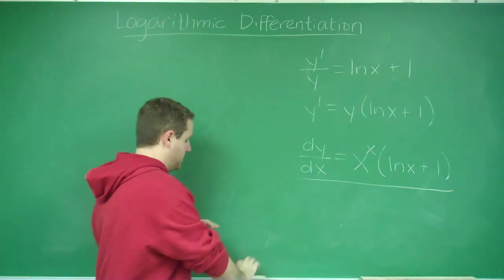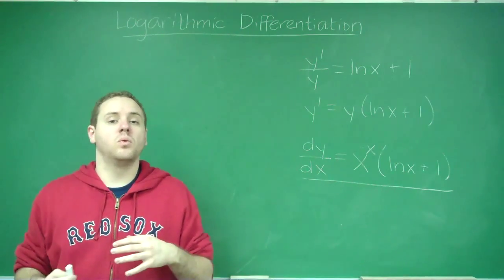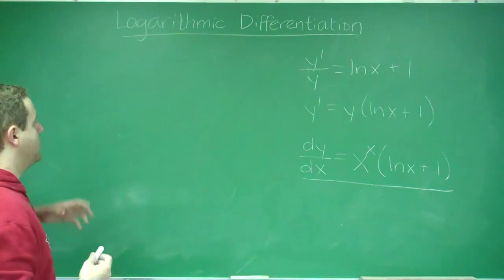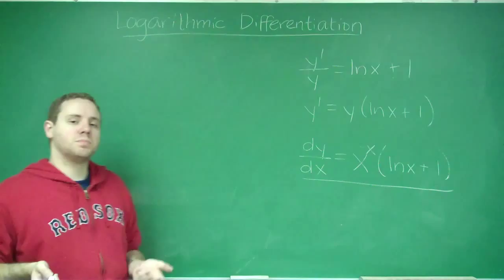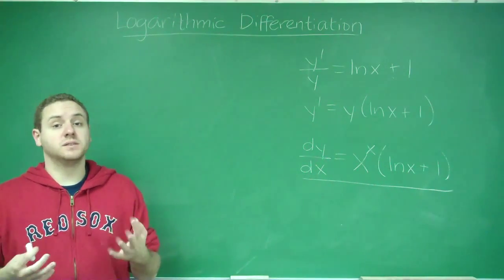The times that I'm speaking of now are when you have a product or quotient of three or more functions. So you know that if you have a product of two functions, you can use product rule. If you have a quotient, you can use quotient rule, or change it into a product and use product rule.